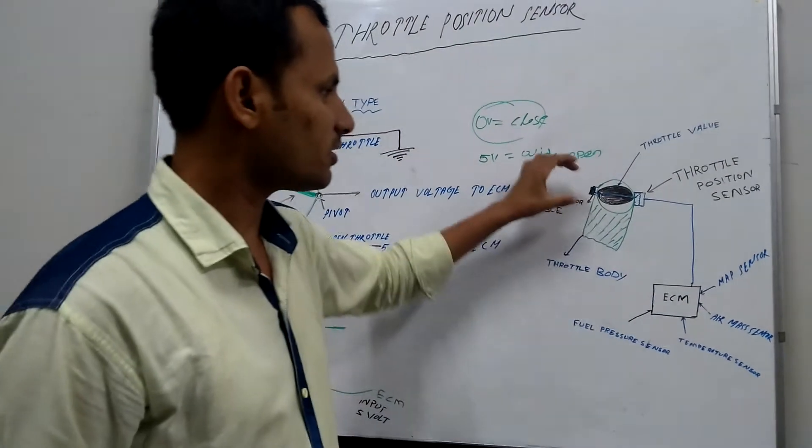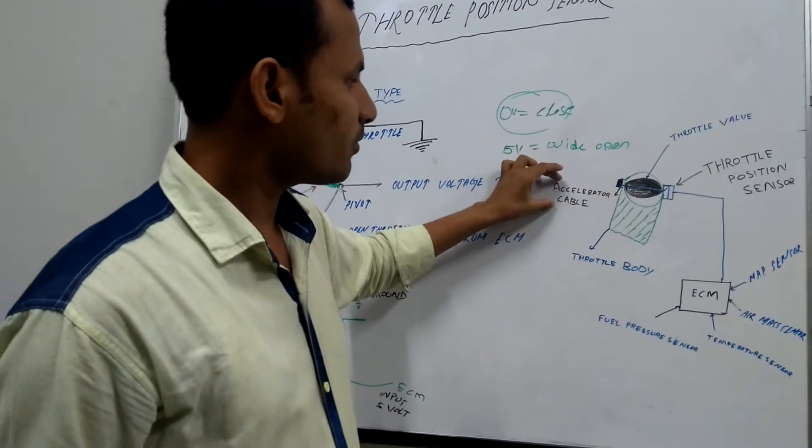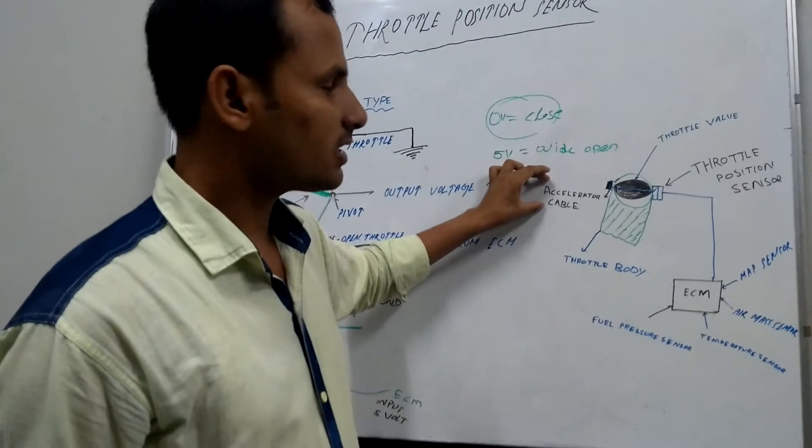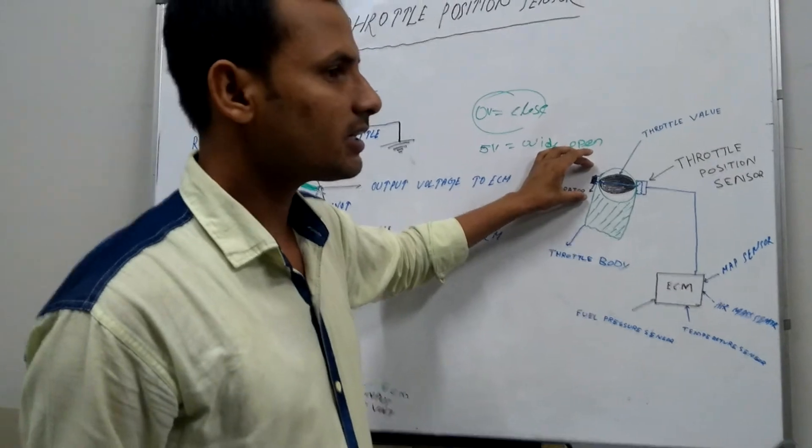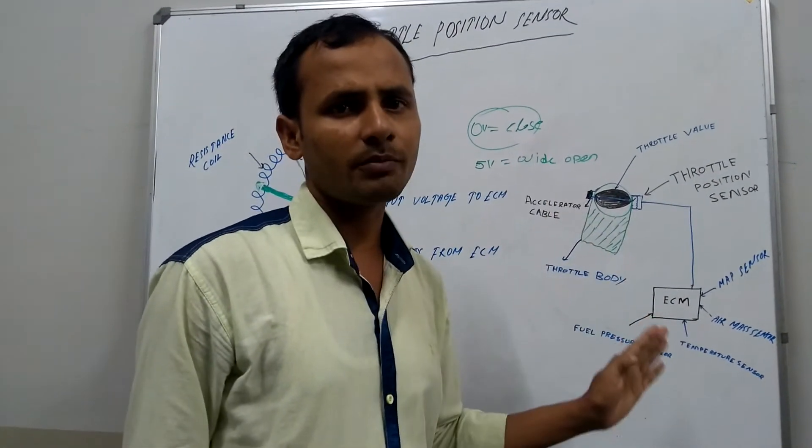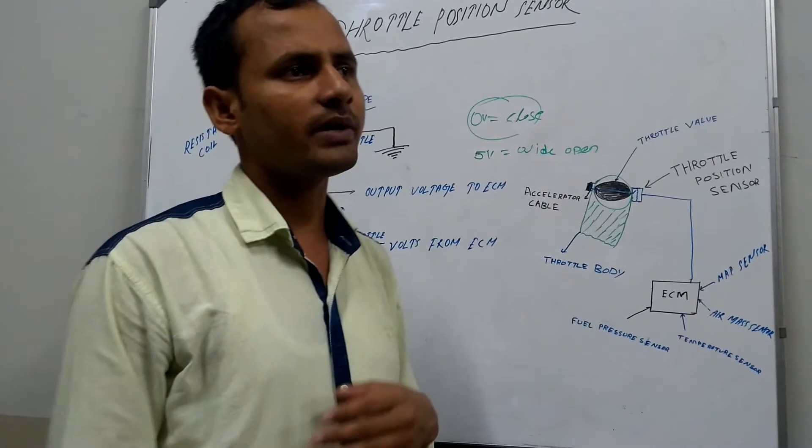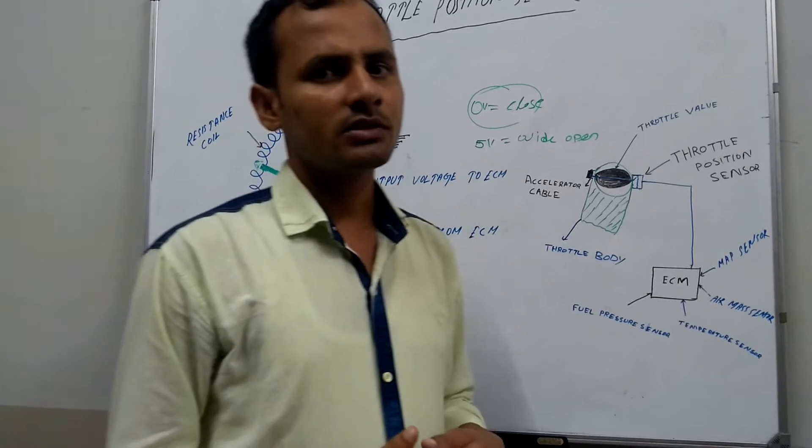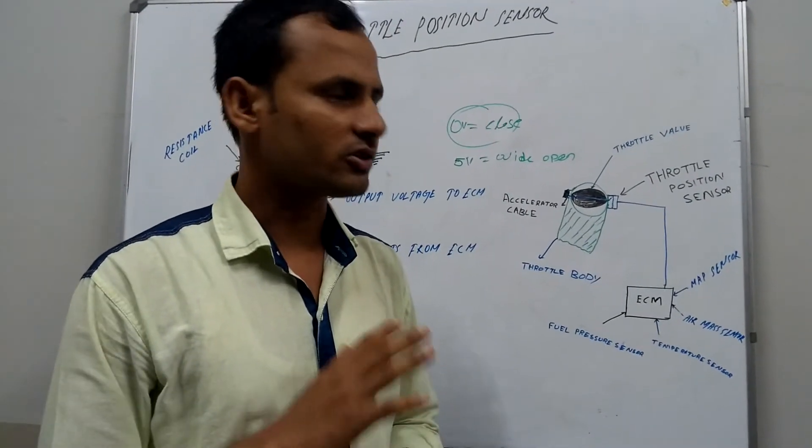Throttle valve is mounted on the throttle body which is activated by accelerator cable, and the accelerator cable is connected to the accelerator pedal, or it is also activated by a throttle position motor. The ECU must know the position of the throttle valve because the amount of air entering into the cylinder depends on the position of the throttle valve.